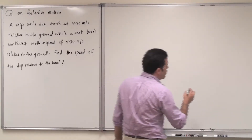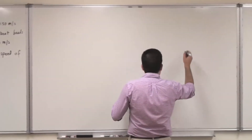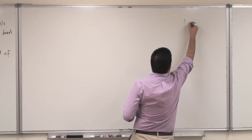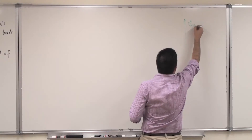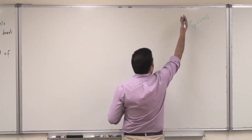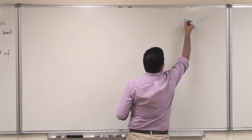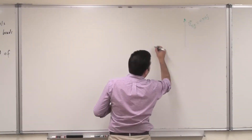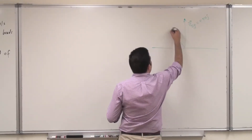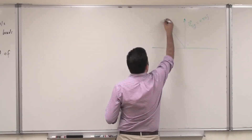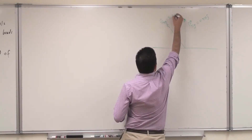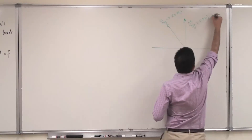We have the velocity of the ship relative to the ground, which is 4.50 j-hat, because it's heading north along the y-axis. Then we have the velocity of the boat relative to the ground, which is 520 meters per second.